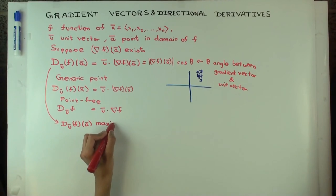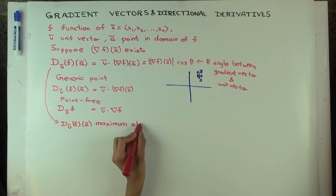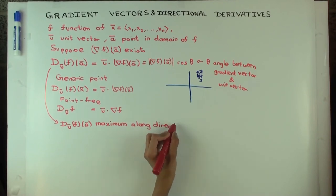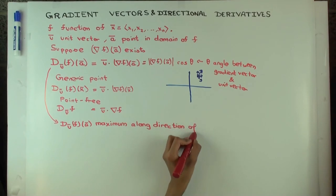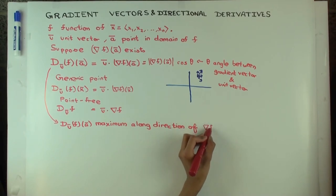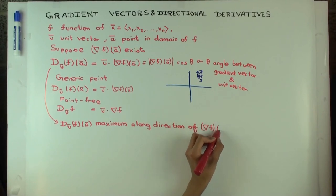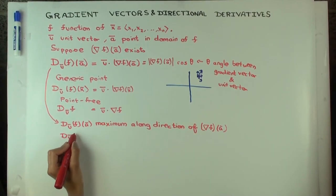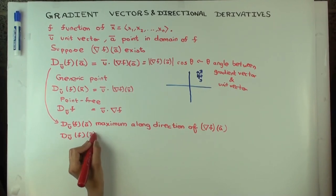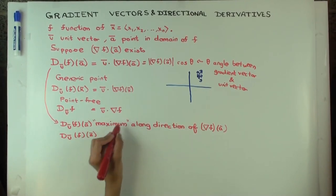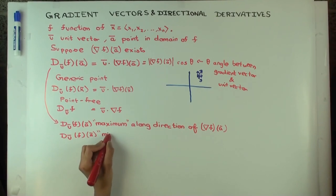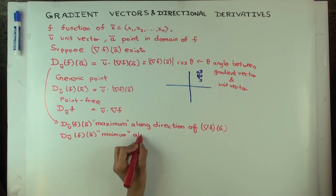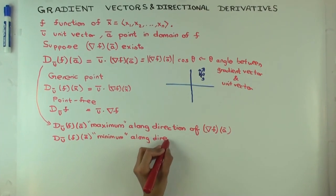Again, if the gradient vector is zero, none of this applies. In the opposite direction to the gradient, the directional derivative will be negative — specifically the negative of its maximum value. So the minimum directional derivative, meaning the maximum in negative magnitude, occurs along the direction of the negative gradient vector.